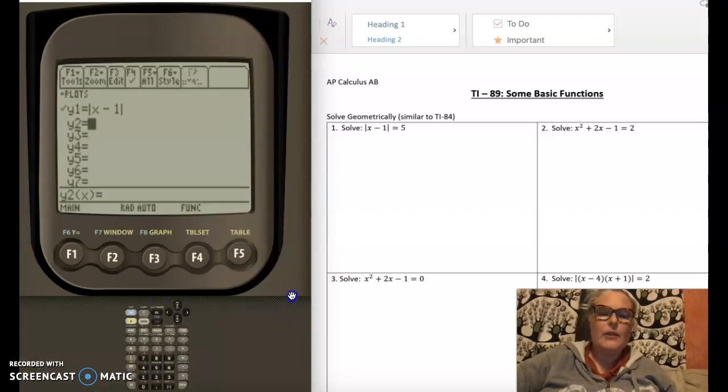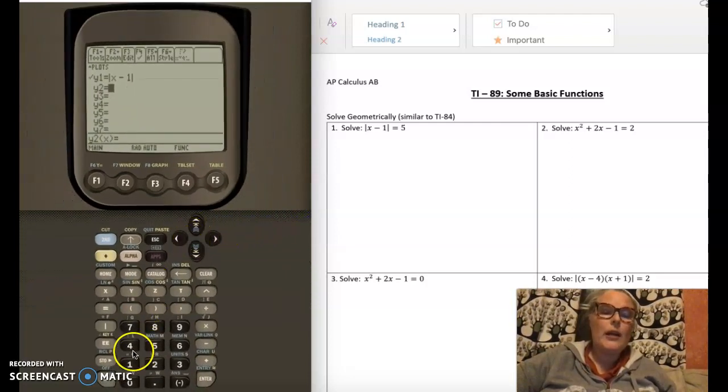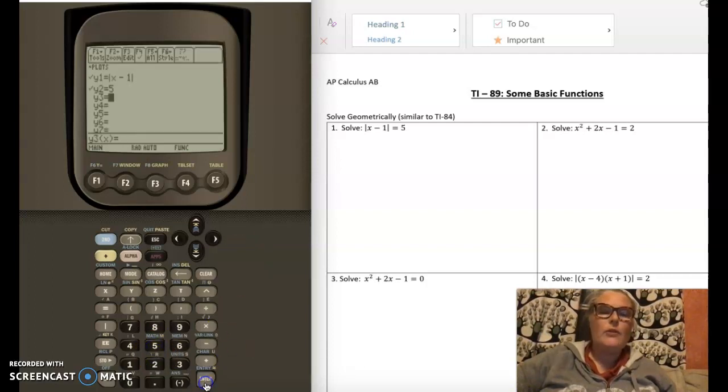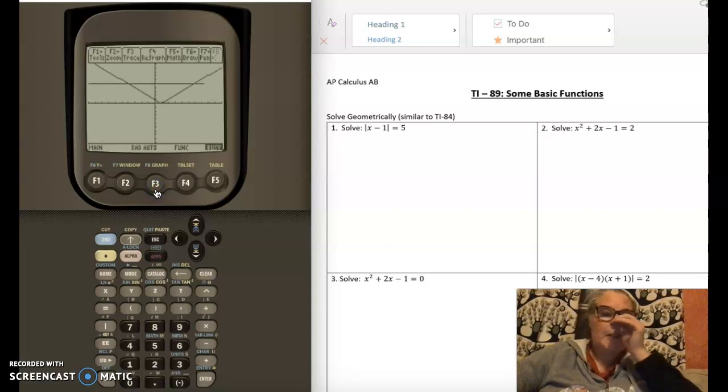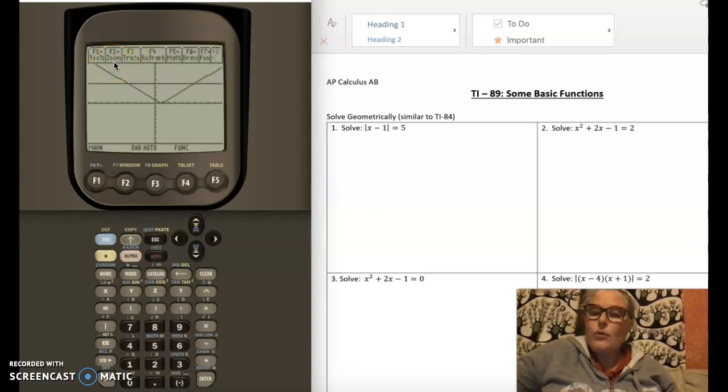It puts the absolute value bars there for me, and then for Y2 I'm going to put the number five. So the number five there and then enter as well. Now just like the 84, the way that the 84 would have that it was active would make the equal signs have a cursor that they're on. The equal signs now we just have check marks here, so this means that this is active. Then you hit graph above the F3. You see in lime or yellow or green or whatever color, hit the diamond button and hit graph.